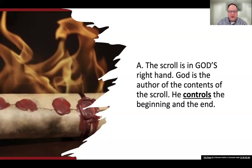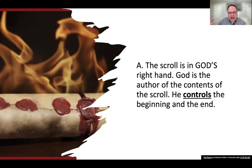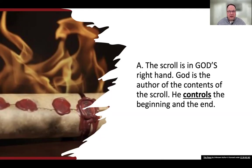The scroll is in God's right hand — the right hand is always the place of strength and power. This is fully in God's control, and he is the author of the contents of the scroll. What is signified here is that he controls the beginning and the end. He's been worshiped in chapter 4 as being eternal, holy, and creator. Chapters 4 and 5 are a foundational component within Revelation, because things are about to get really dark and scary, but we need to understand who's controlling everything — God is in control, even when everything seems out of control.